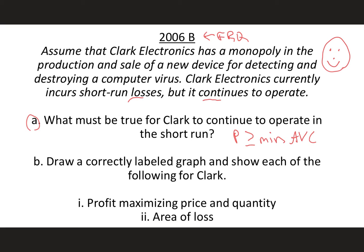Draw a correctly labeled graph and show each of the following for Clark. So we're looking to do profit maximizing price and quantity. That's always going to be where MR is equal to MC, so that's not so new for us, but this is known as the profit maximizing rule, and we also have to showcase the area of loss for Clark. Let's go ahead and do that. We're going to graph the monopolist. Remember, it's not side-by-side graphing. We're looking at just a single firm, and this is Clark, this is the firm that's Clark Electronics.